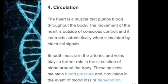The heart is a muscle that pumps blood throughout the body. The movement of the heart is outside of conscious control and it contracts automatically when stimulated by electrical signals. Smooth muscles in the arteries and veins play a further role in the circulation of blood around the body, maintaining blood pressure and circulation in the event of blood loss or dehydration.